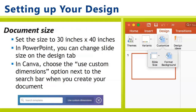Your poster needs to be 30 inches by 40 inches, and you can change that setting in PowerPoint using the Design tab. It's okay if you use landscape or portrait orientation as long as it matches those dimensions. In Canva, there's also an option to change the size, so make sure you do this first before you start your design.